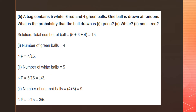A bag contains five white, six red, and four green balls. If one ball is drawn at random, what is the probability that the ball drawn is green? The total number of balls is five plus six plus four, which equals 15 balls. The probability of getting a green ball equals four divided by 15.